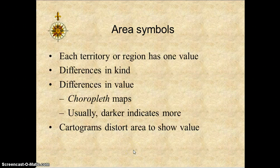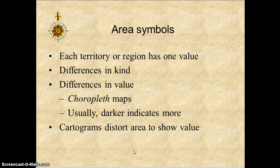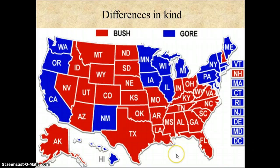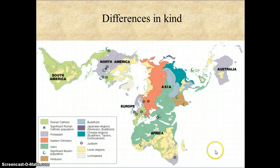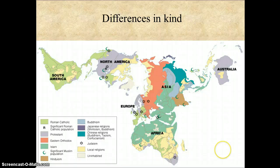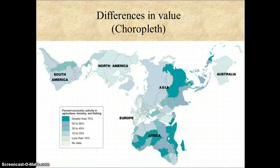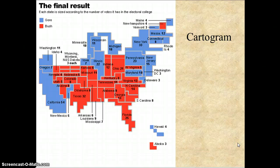Area symbols: each territory or region has one value. Cartograms distort area to show the value. This map is quite interesting — as you can see, you are not seeing your continents in your typical way. This is showing the religion found worldwide. This is a cartogram.